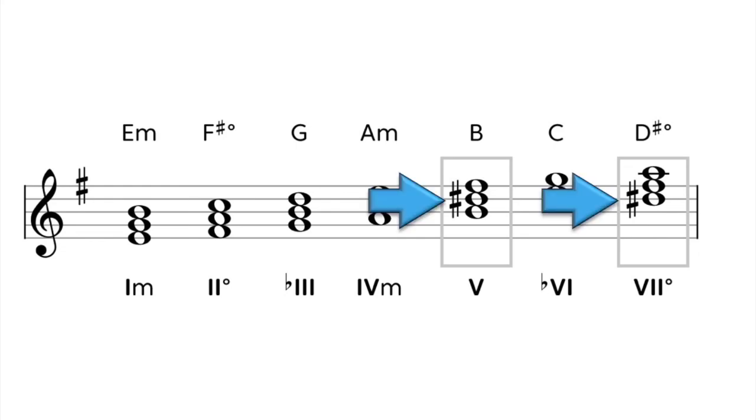Also notice that in both the B major and D sharp diminished chords, there is a D sharp, that raised seventh scale degree, which is a part of the harmonic minor scale.